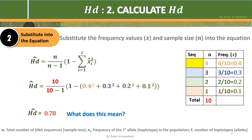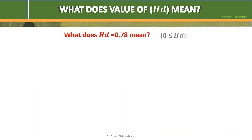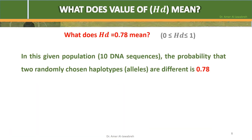What does HD equals 0.78 mean? It means that in this given population of 10 DNA sequences, the probability that two randomly chosen haplotypes or alleles are different is 0.78.